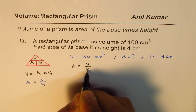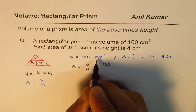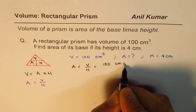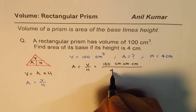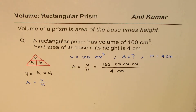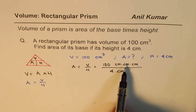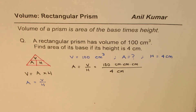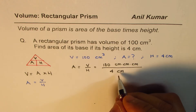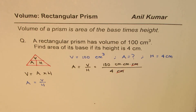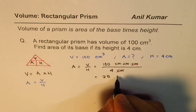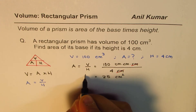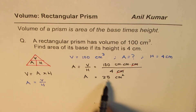Now it is easy — we can calculate what area is. Area equals volume divided by height. Volume is 100 centimeters cubed, which I write as centimeter times centimeter times centimeter. Height is 4 centimeters. Writing centimeter cubed this way helps you get the correct units. One centimeter from the numerator and one centimeter from the denominator cancel. When you divide 100 by 4, you get 25.